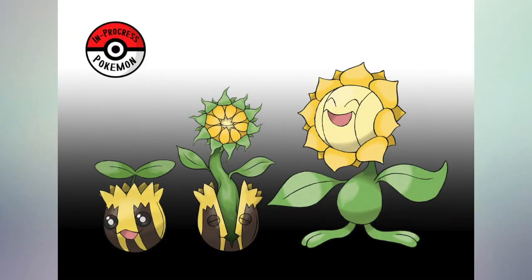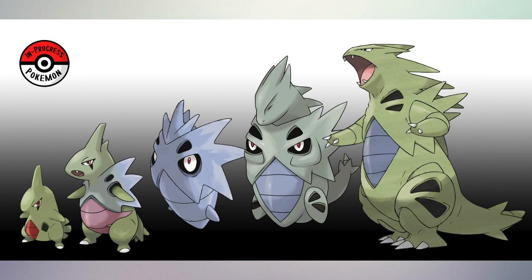Number 14 is the evolution between Sunkern and Sunflora. Sunkern is a seed that turns into a flower. The middle evolution doesn't really feel like a Pokemon because I don't really see the eyes — it just looks like a flower. I guess if there was a middle evolution it would look something like this.